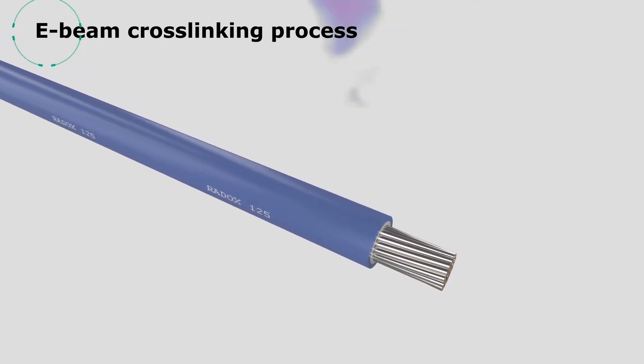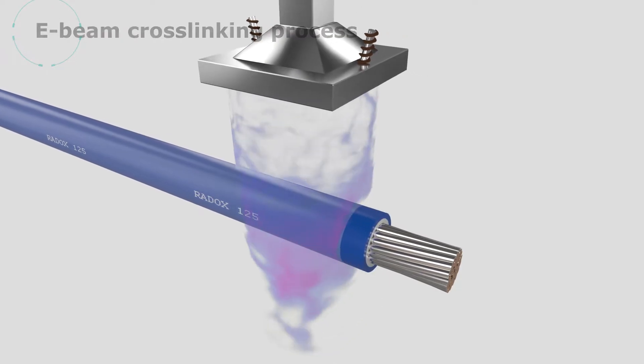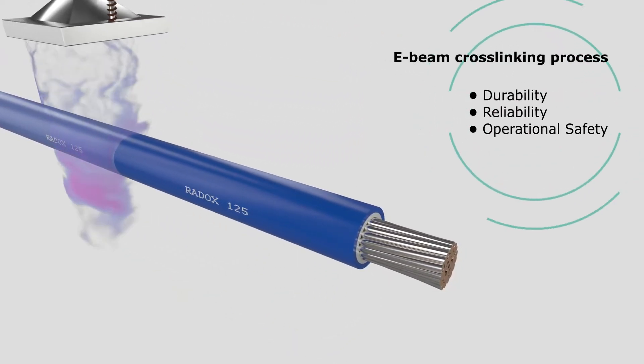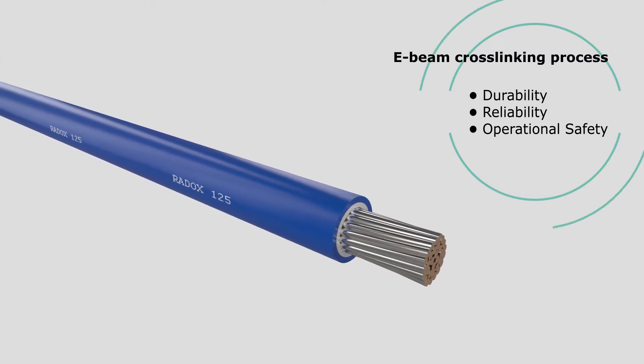The Huber & Sooner Redox cross-linking process significantly improves the thermal, mechanical, and chemical properties of the cable's insulation material, thereby improving the cable's resistance to high temperatures and short-term peaks, such as short-circuit currents.